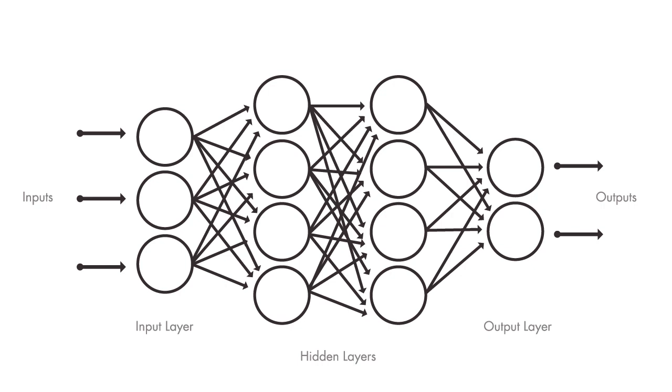The term deep usually refers to the number of hidden layers in the neural network. While traditional neural networks only contain two or three hidden layers, some of the recent deep networks have as many as 150 layers.